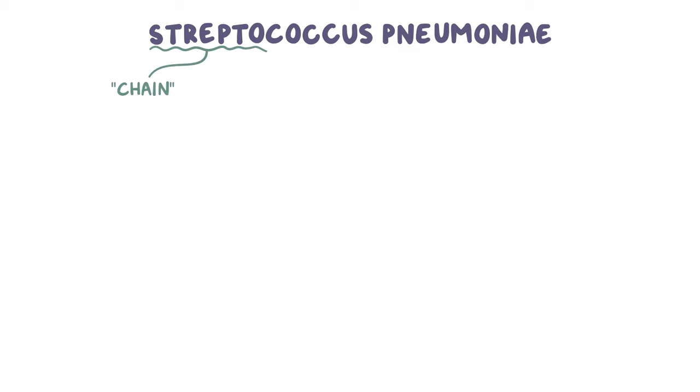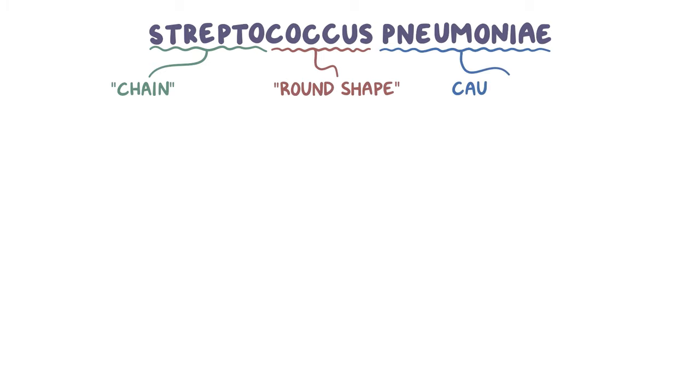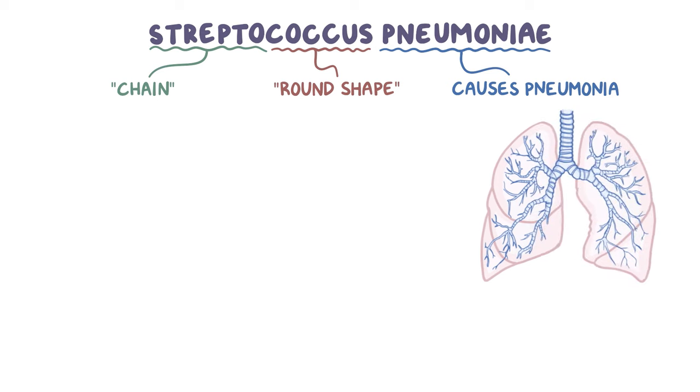Streptococcus pneumoniae, or strep pneumoniae, can be broken down into strepto, which means chain, coccus, which means round shape, and pneumoniae, which refers to the fact that it causes pneumonia. No surprises there.